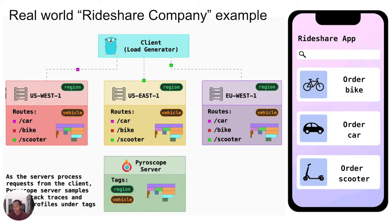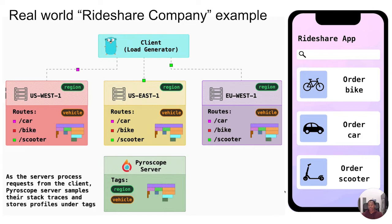For Pyroscope, we built a real-world rideshare example to exhibit how this actually works in practice. The reason we did this is because if you're a company like Uber or Lyft, you can imagine where just a tiny bit of latency could be the difference between someone staying in your app and going to your competitor's app because your app is loading too slowly, which then translates into revenue and all that kind of stuff.